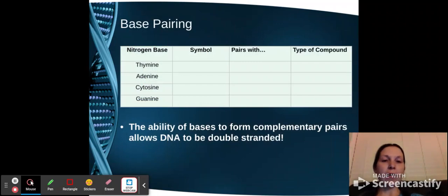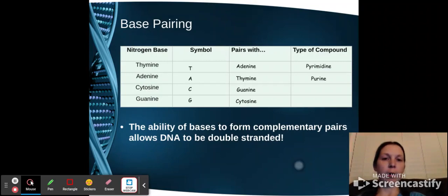So we do have base pairing that occurs within the DNA strands which allow the two sides of DNA to attach to each other to make that double strand, complementary strand concept that was mentioned in the standard. So we have four nitrogen bases that we look at: thymine, adenine, cytosine, and guanine.